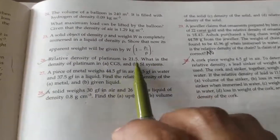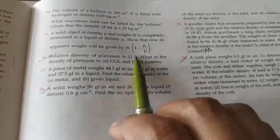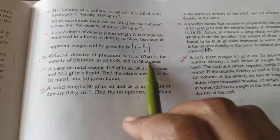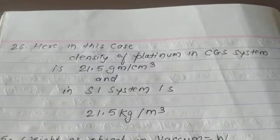Platinum's relative density is given, you have to write this in CGS or SI system, which is very easy.